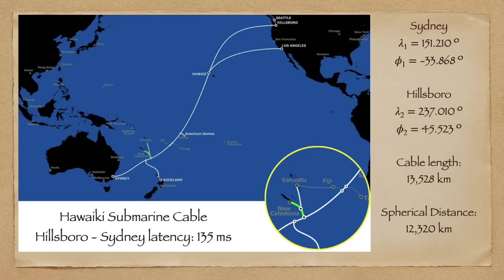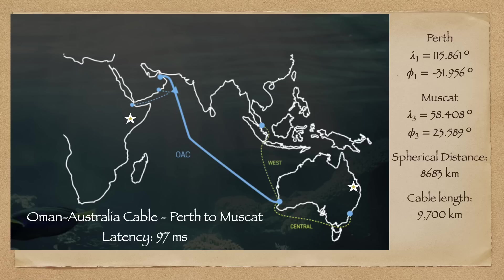For instance, the time it takes a signal to travel from Hillsborough, Oregon to Sydney, Australia along the Hawaii-Iki submarine cable is 135 milliseconds, corresponding to a latency of one millisecond per 100 kilometers. A similar latency rate of one millisecond per 100 kilometers is observed along the Oman-Australia cable between Perth and Muscat.